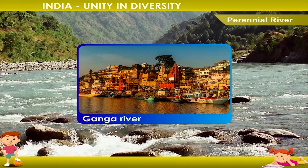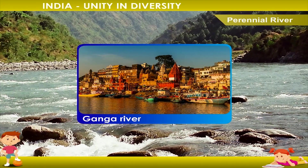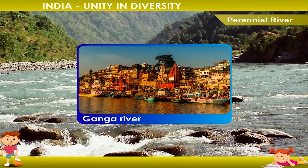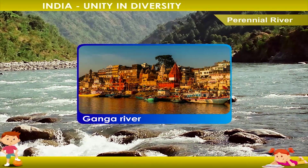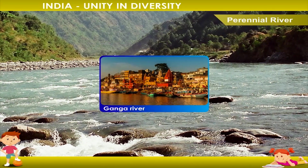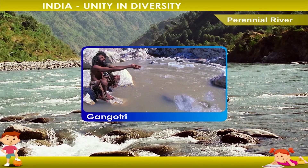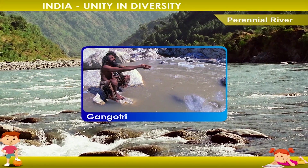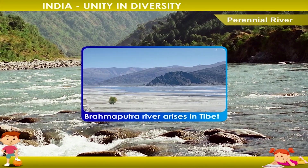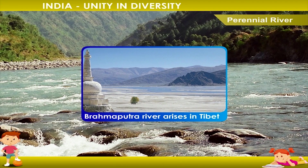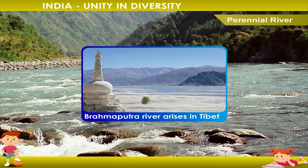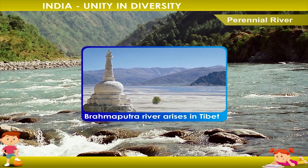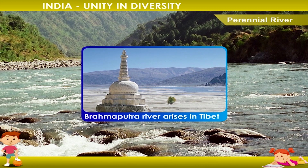The Ganga is the most important river in the northern plain. The river originates from a glacier called Gangotri. The Brahmaputra river arises in Tibet and enters India from the east direction. It flows through a narrow valley in Assam.